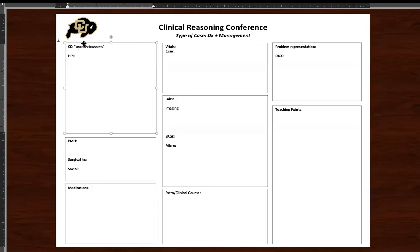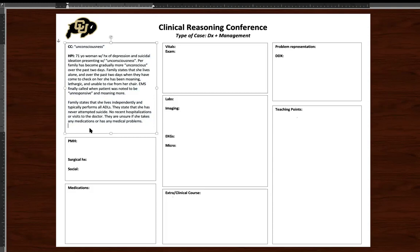For our first aliquot of information, we have the chief complaint of unconsciousness. This is a 71-year-old woman admitted last night to the medical ICU at University of Colorado. She has a history of depression and suicidal ideation, presenting with unconsciousness. For the family, she became gradually more unconscious over the past two days. She lives alone, and over the past two days, she's been moaning, lethargic, and unable to rise from her chair. EMS was called when she was noted to be unresponsive. The family states she performs all ADLs by herself. They are unsure if she takes any medications or has any medical problems.